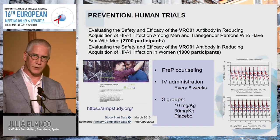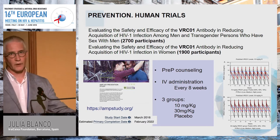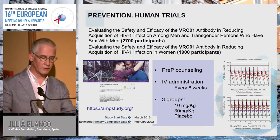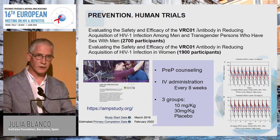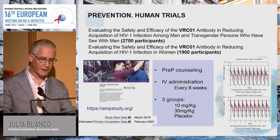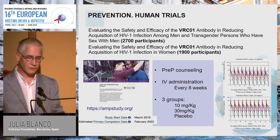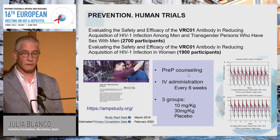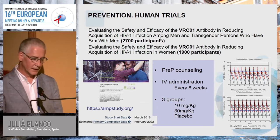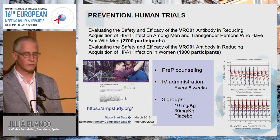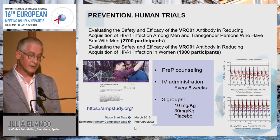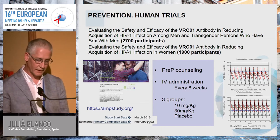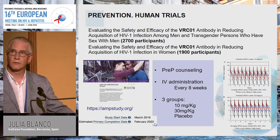A more classical approach is the administration of a recombinant antibody—VRC01, an anti-CD4 binding site antibody—to HIV-uninfected individuals. This is a very large HIV prevention study conducted in the US with men who have sex with men and in Africa in women, with almost 5,000 participants. This is called the AMP study, expected to finish in 2022.